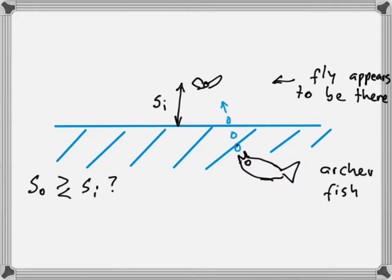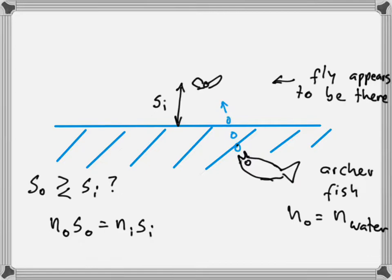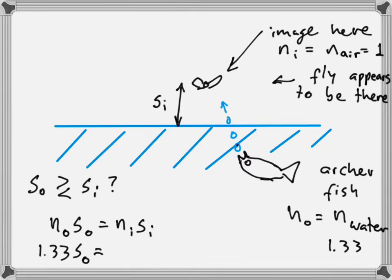We want to figure out where the actual fly is relative to its image. The observer is the archer fish, so n_o is the index of refraction of water, which is 1.33. The image of the fly forms in air, so n_i = 1. The equation becomes: 1.33 × s_o = 1 × s_i.